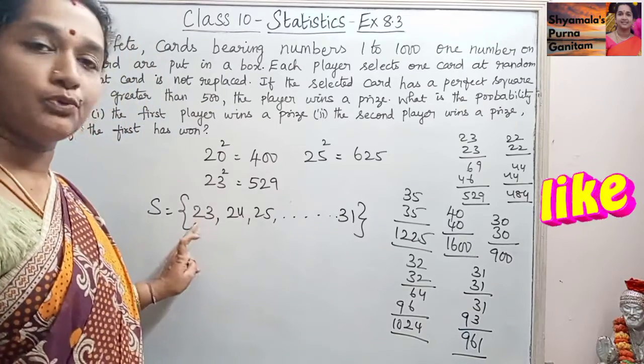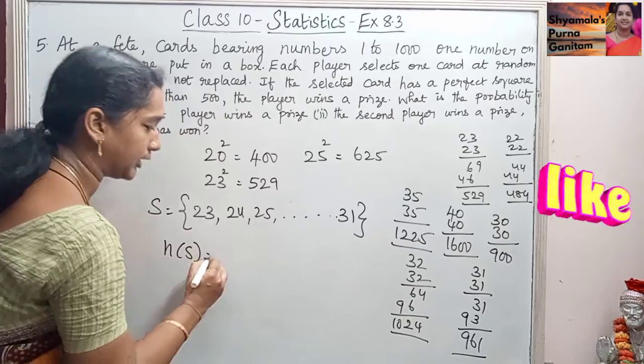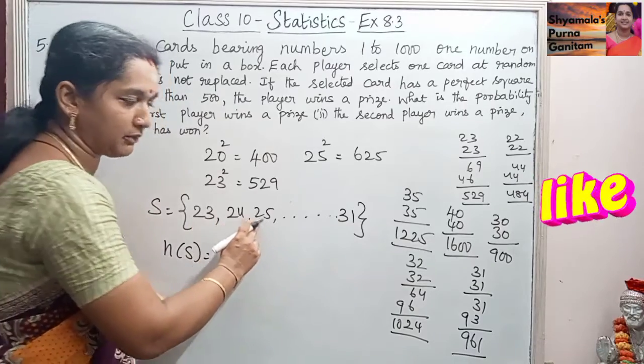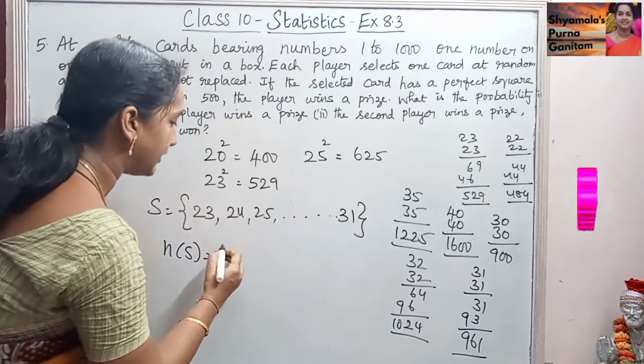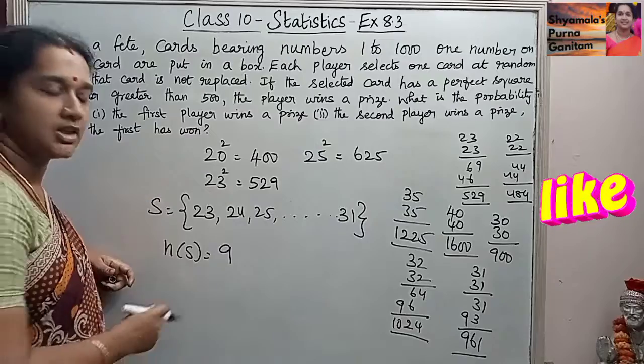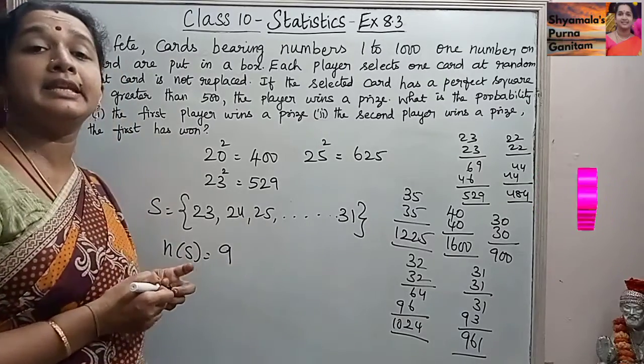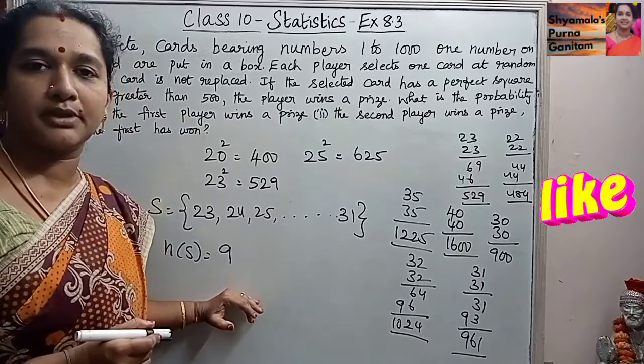So from 23 to 31 we are having n(S) is equal to 23, 24, 25, 26, 27, 28, 29, 30, 31. So we are having 9 numbers for the given condition. Like that, 9 perfect square numbers are there greater than 500 and less than 1000.